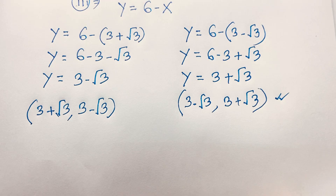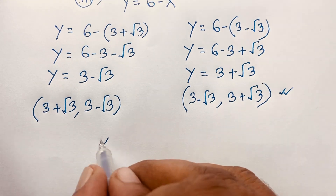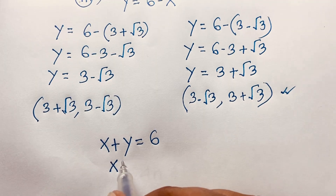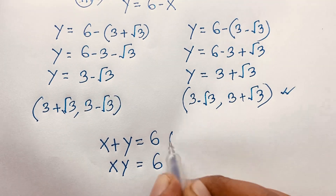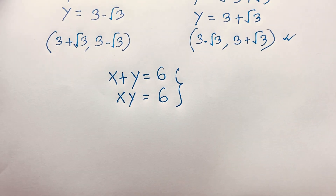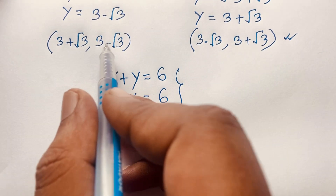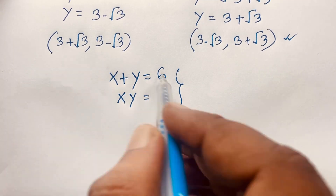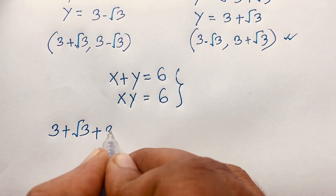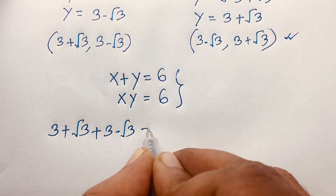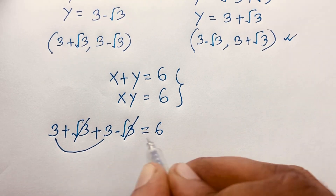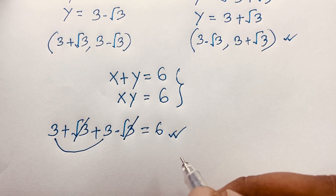Let us verify our answer. Our question was x plus y equals 6, and x times y equals 6. Now we substitute the values of x and y. For the sum: 3 plus square root 3, plus 3 minus square root 3 equals 6. The square root 3 terms cancel out, and 3 plus 3 equals 6. So the left hand side equals the right hand side. Verified.